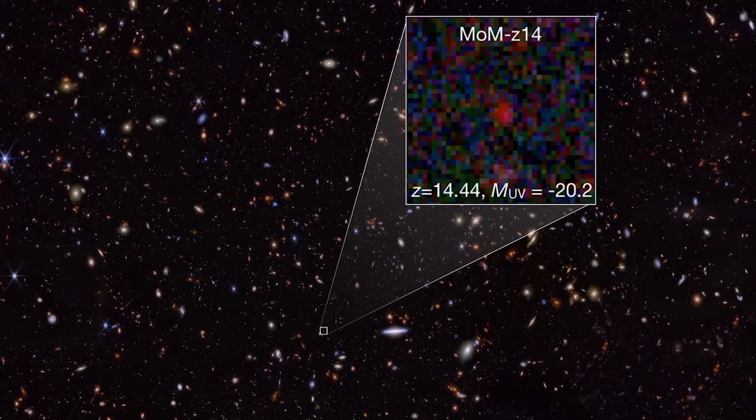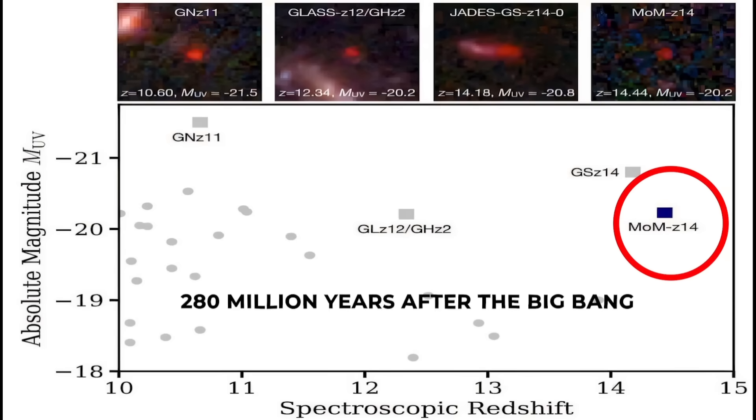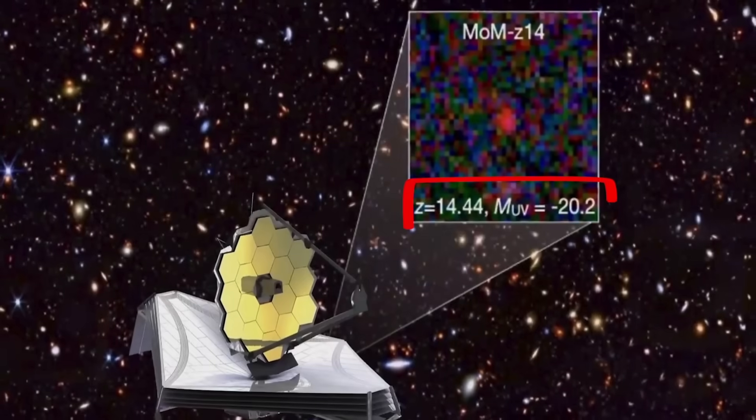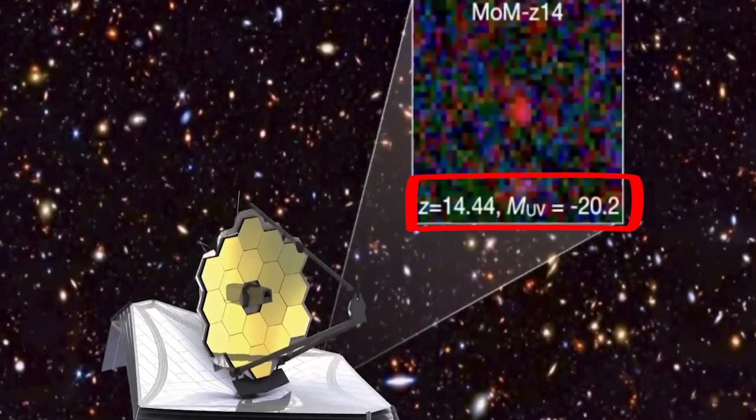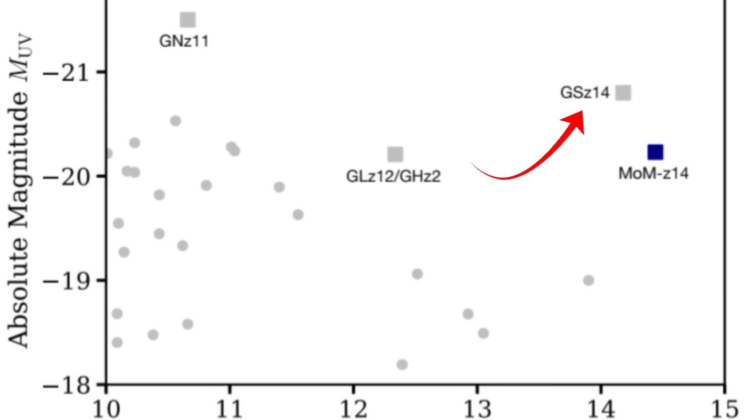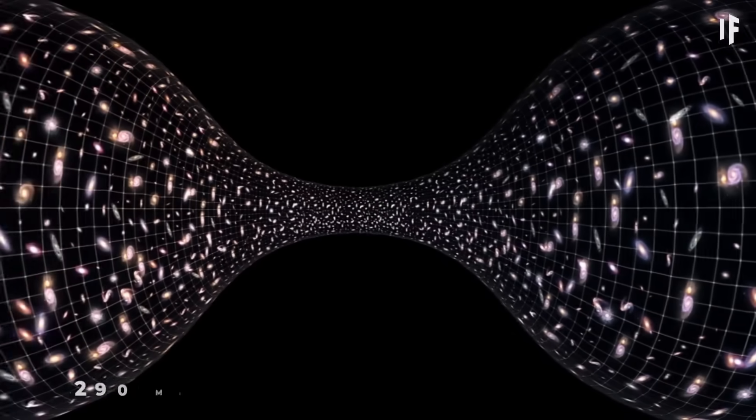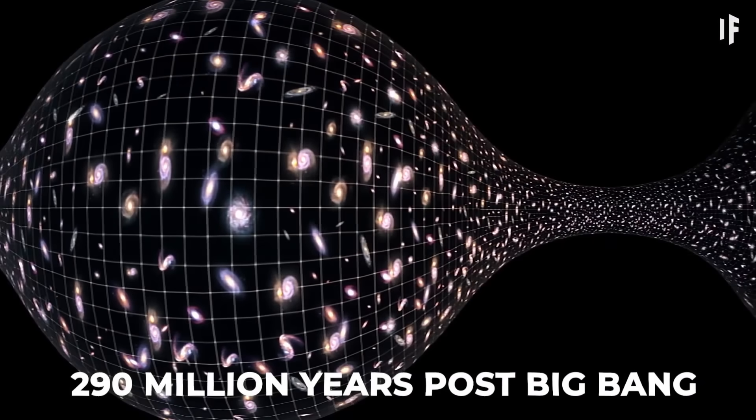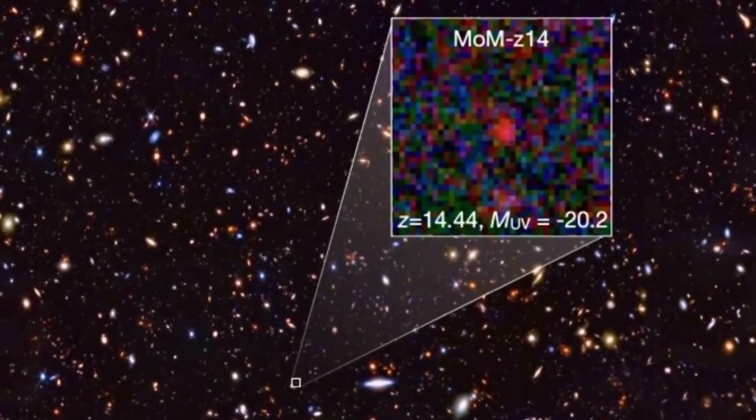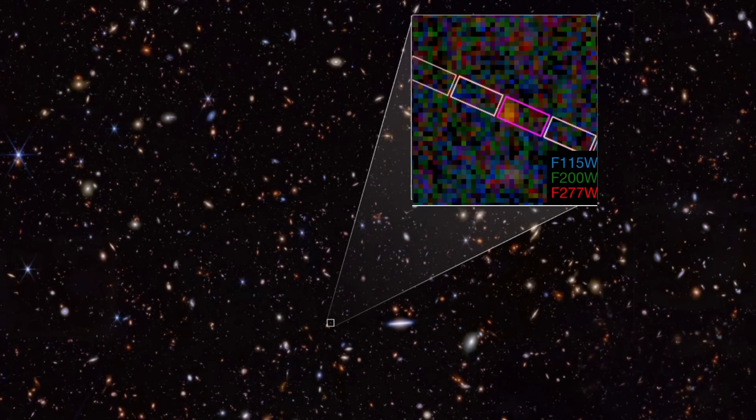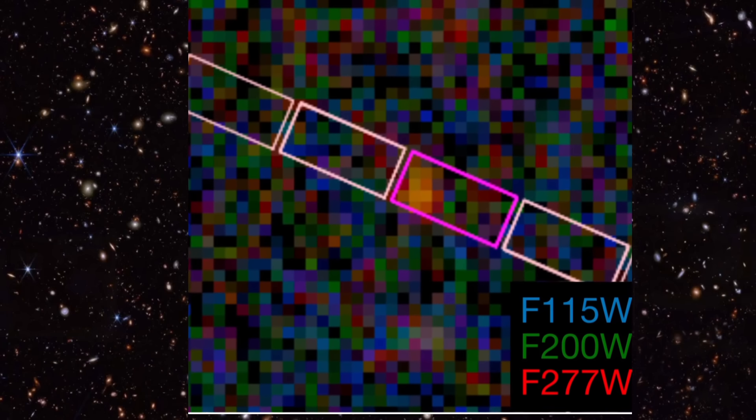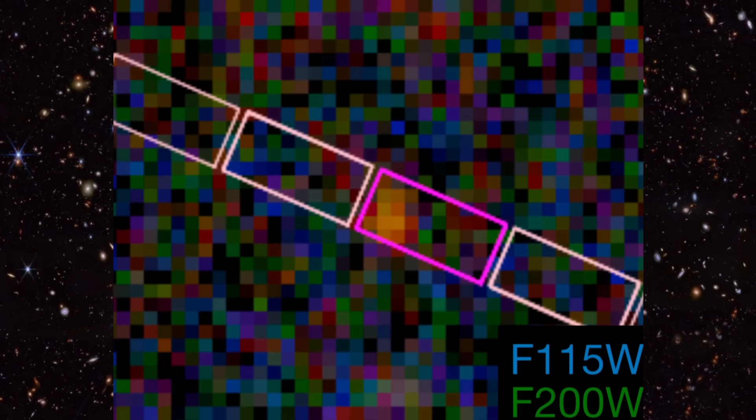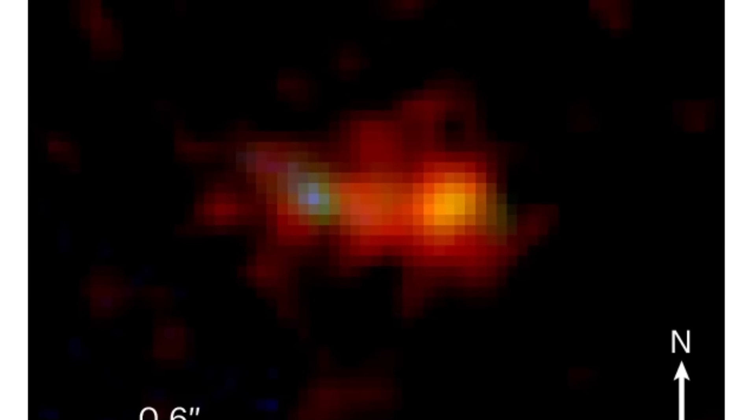An object named MOM Z14, dating back to just 280 million years after the Big Bang. MOM Z14 exhibits a redshift of 14.44, surpassing the previous record holder, Jade's GSZ-14-0, which had a redshift of 14.32 and was observed at 290 million years post-Big Bang. This discovery completely defies our current understanding of the early universe. Scientists still don't know exactly what it is – galaxy? Black hole? Something else entirely? But whatever it is, it shouldn't exist this early according to our current models.